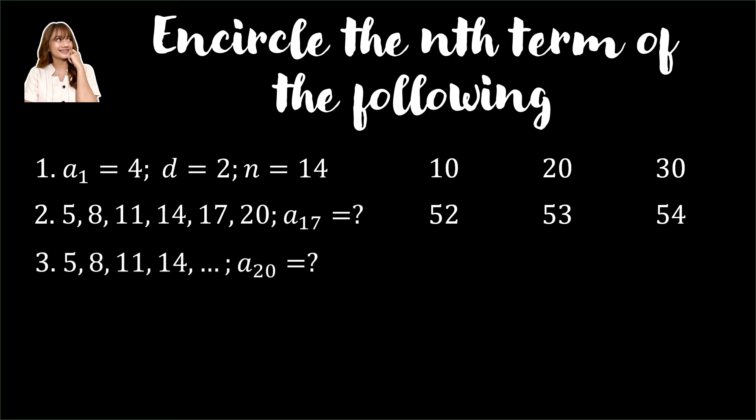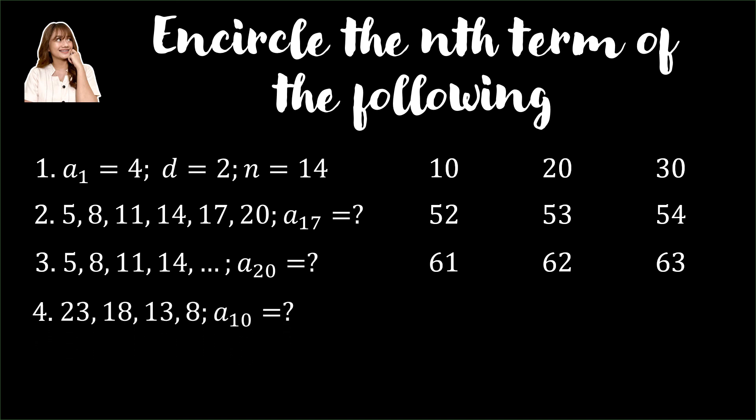Number 3: given the sequence 5, 8, 11, 14, and so on, among these numbers, determine the 20th term. Number 4: given the sequence 23, 18, 13, 8, and the answer choices negative 22, negative 23, and negative 24 — which among these numbers is the 10th term of the sequence in item number 4?